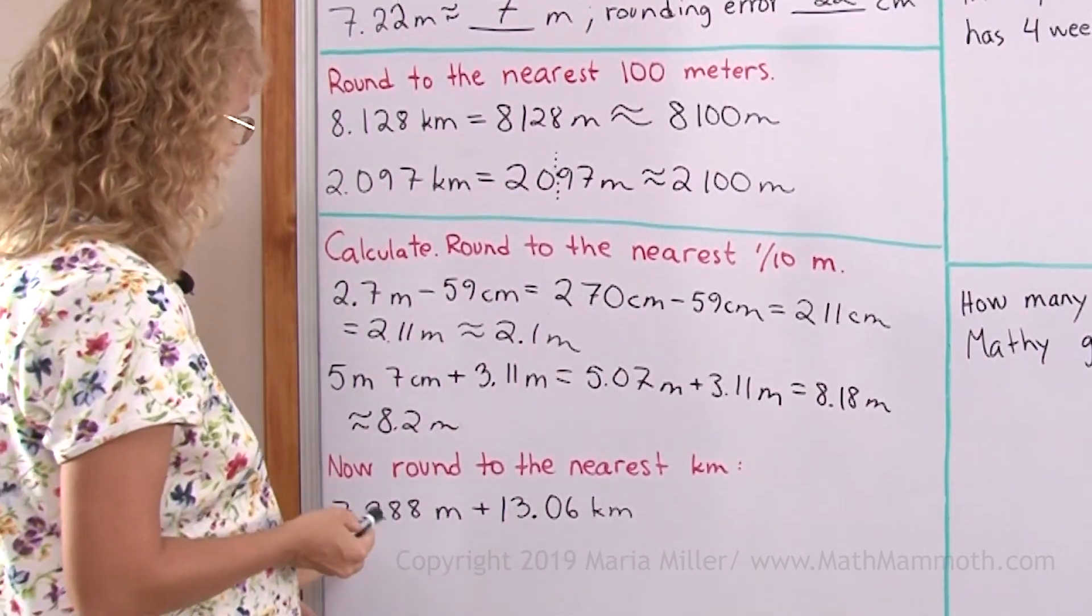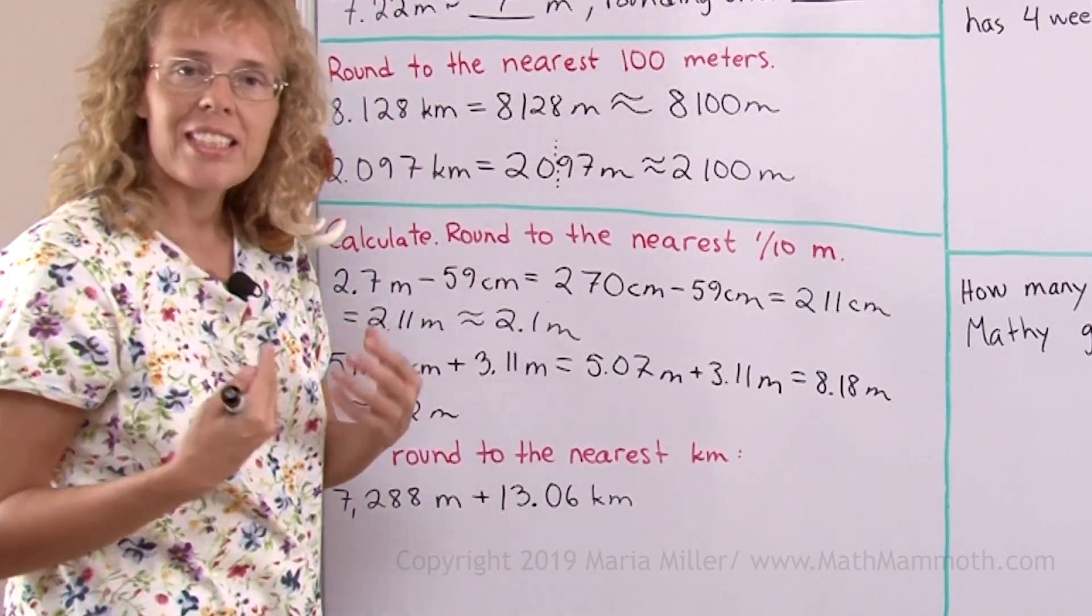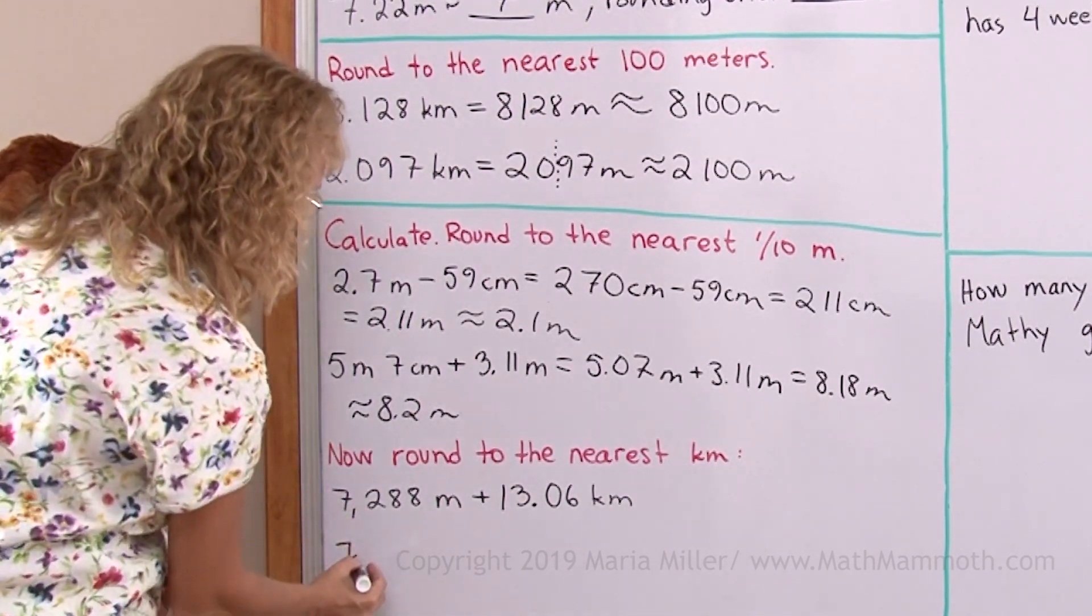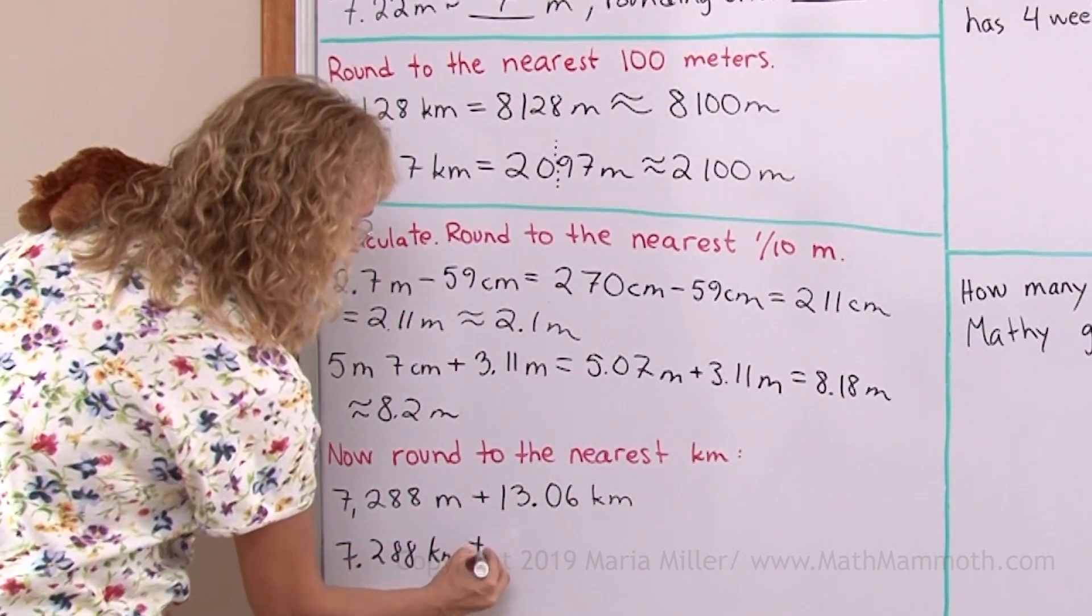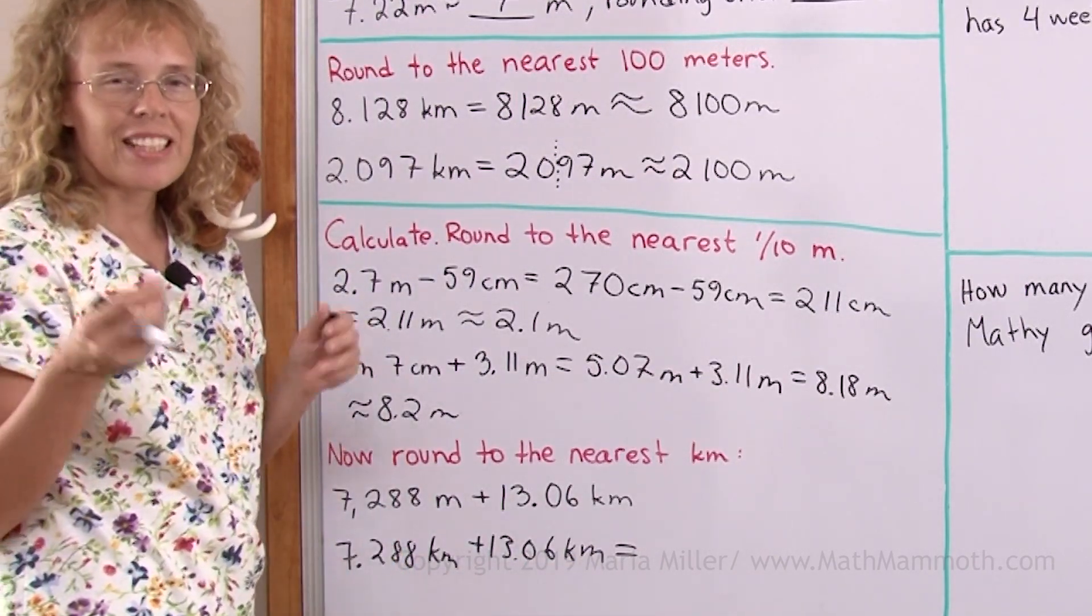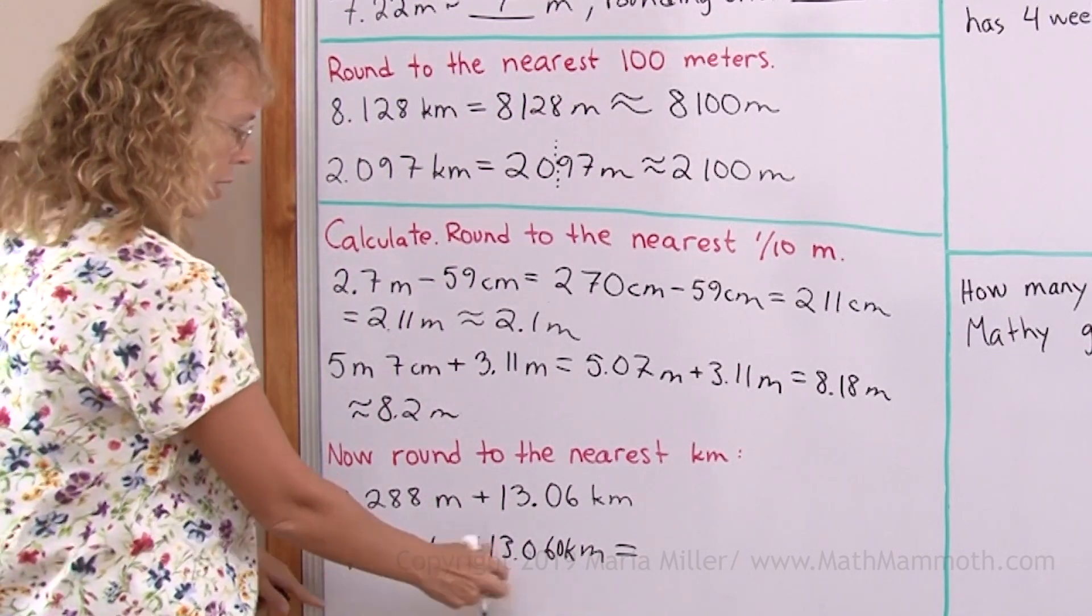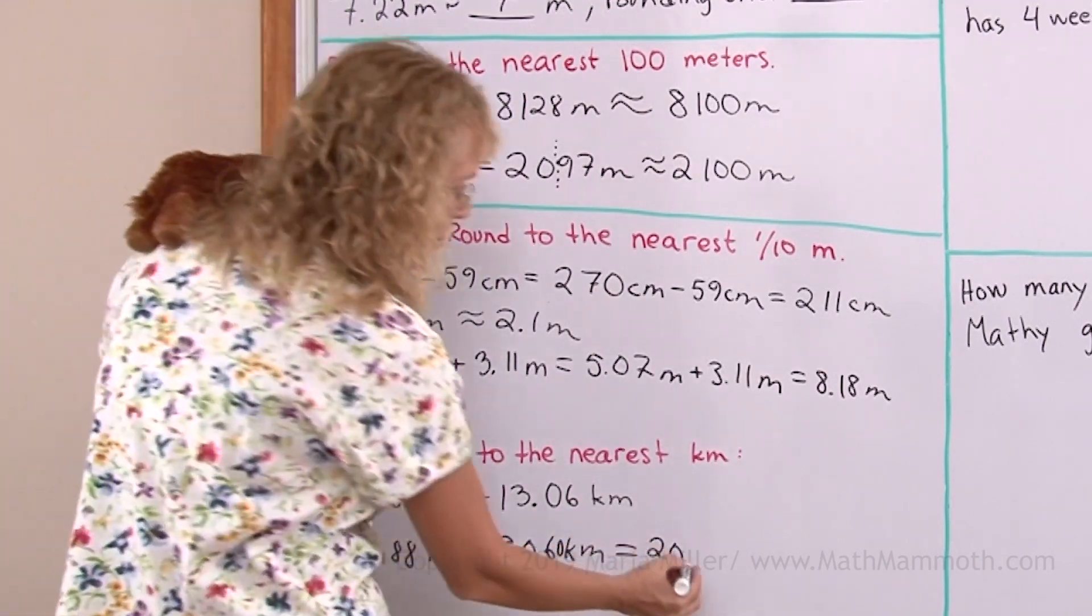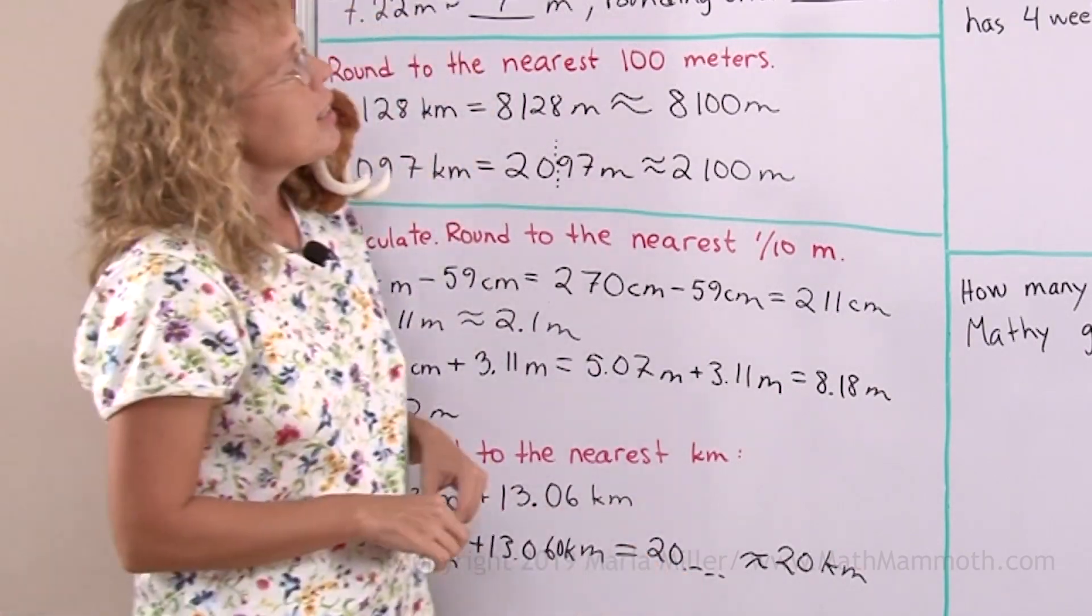Now round to the nearest kilometer. This one here, let's change it to kilometers. This is already in kilometers. 7,000 meters would be exactly 7 kilometers. So when I write this whole thing as kilometers, this 7 has to go to the ones place, and so then I have to have the rest of the digits like this. So I get exactly 7 kilometers from the 7,000, and then 13.06 kilometers. Now these decimals are of different lengths, so let me add 0 here. 7 plus 13 would be 20. Actually I don't need to add them. It's going to be rounded to 20 kilometers no matter what it is, because I cannot get a digit that would be 5 or more. So a little shortcut here.